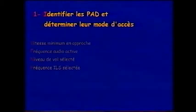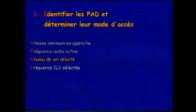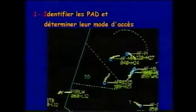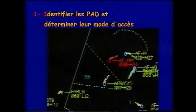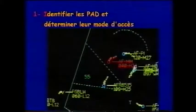Parmi ces informations, certaines ont un caractère exploratoire. Elles pourraient permettre d'anticiper et de gérer certaines situations, telles que les rattrapages sur l'axe ou d'éventuelles sélections de fréquences erronées. Le paramètre niveau de vol sélecté sera utilisé dans l'étude pour déclencher une alerte en cas d'incompatibilité avec la structure de l'espace aérien concerné.